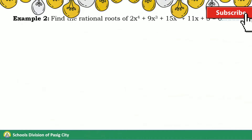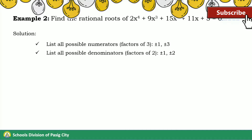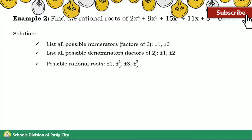Let us now proceed with Example 2. Find the rational roots of 2x⁴ + 9x³ + 15x² + 11x + 3 = 0. For the solution, first list all possible numerators from the factors of the constant term: ±1 and ±3. Next, list all possible denominators from the factors of the leading coefficient: ±1 and ±2. Divide the factors of the constant by the factors of the leading coefficient to get the list of all possible rational roots. Since all the terms in the polynomial are positive, the possible positive values can be eliminated. Let us try out −1, −3, −½, and −3/2 in synthetic division.